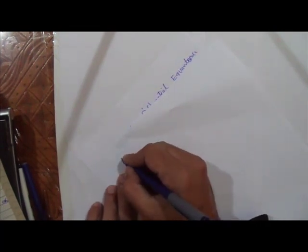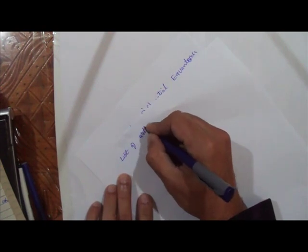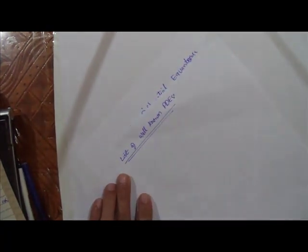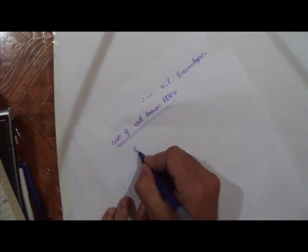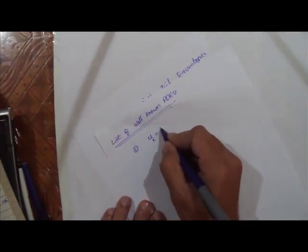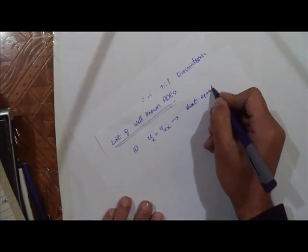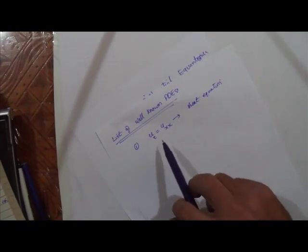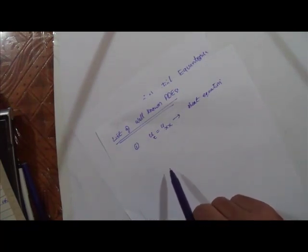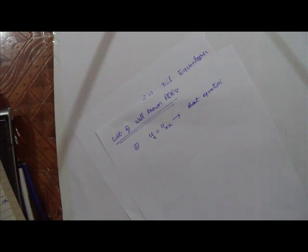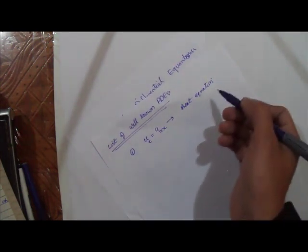We will now list some well-known PDEs. The first and simplest equation is u_t = u_xx. This equation is called the heat conduction equation, or heat equation. This equation basically models the flow of heat in a rod or in a solid object. This is called the heat equation in one dimension, because there is one time variable and one spatial variable.